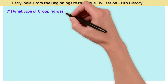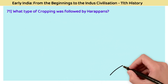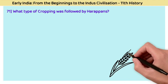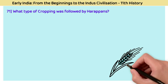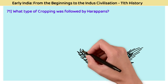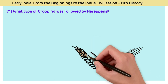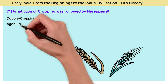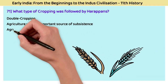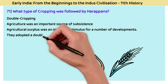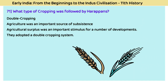Question 71: What type of cropping system was followed by Harappans? The answer is a double cropping system. Agriculture was an important source of subsistence. Agricultural surplus was an important stimulus for a number of developments, and the Harappans adopted a double cropping system.